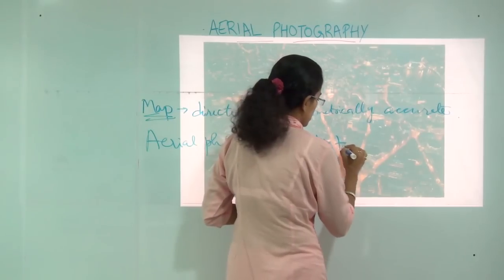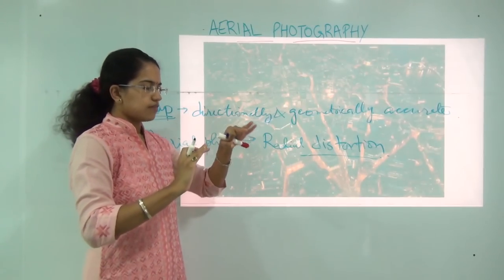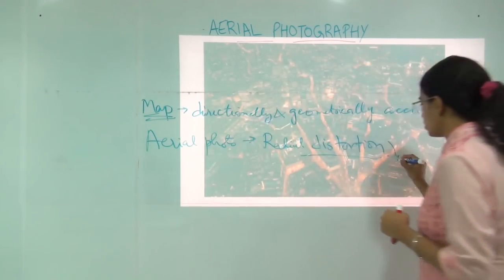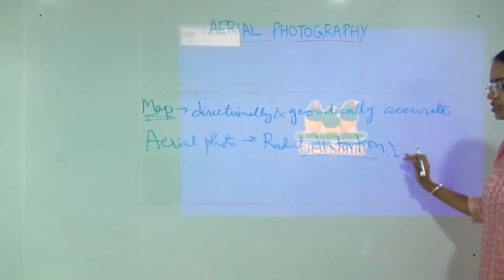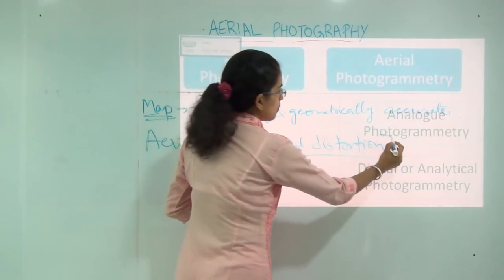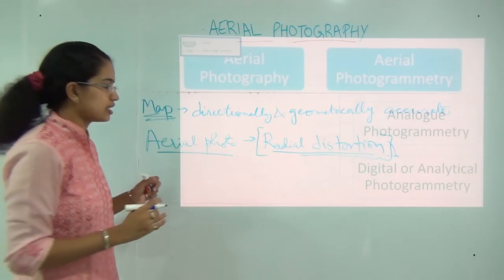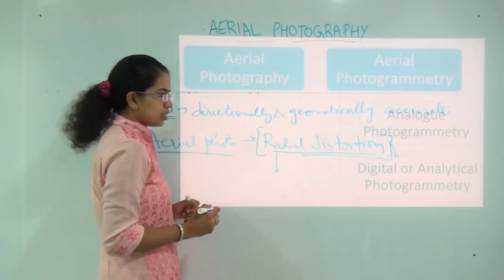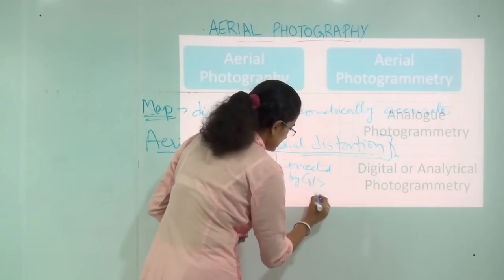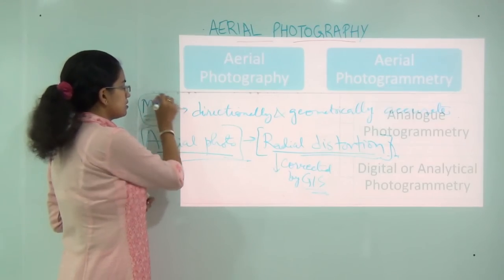We will be talking about radial distortion in detail in further sessions, but as a basic preview: when we are taking a photograph of the topography or landscape of the Earth, certain kinds of distortions come up and these distortions need to be removed. Aerial photographs have radial distortions, but the best thing is these radial distortions can now be corrected by GIS. As a result, aerial photographs have gained huge popularity in recent days compared to conventional mapping methods.